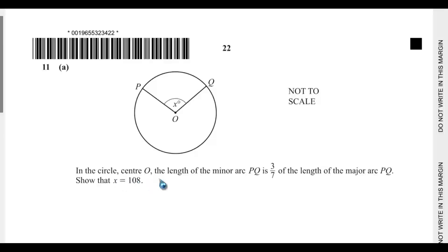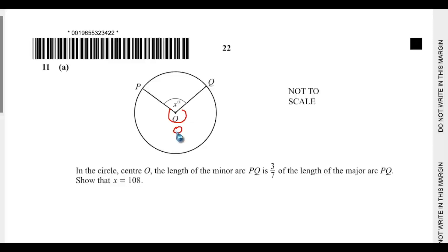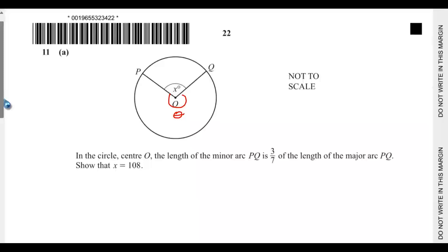Question 11a: in the circle center O, the length of the minor arc PQ equals 3/7 of the length of the major arc PQ. Show that x equals 108. So let's denote this reflex angle — let's call this theta. From this statement, we can see that the length of the minor arc PQ is equal to 3/7 of the length of the major arc.